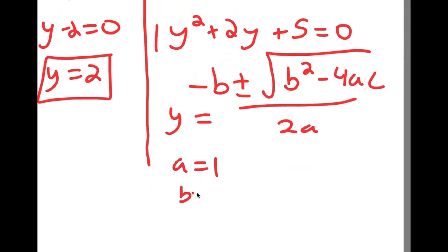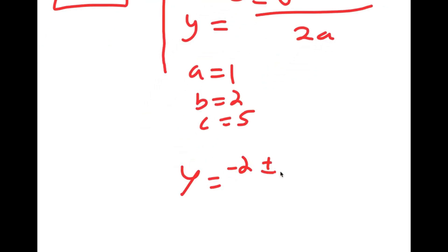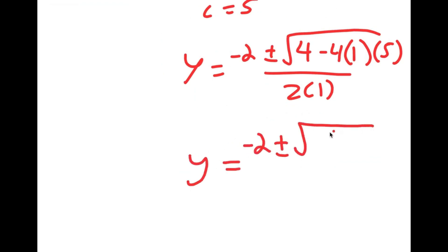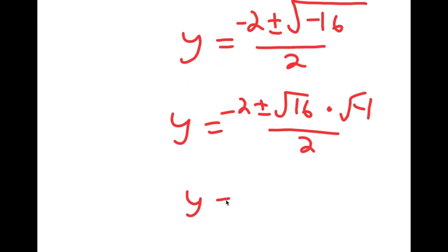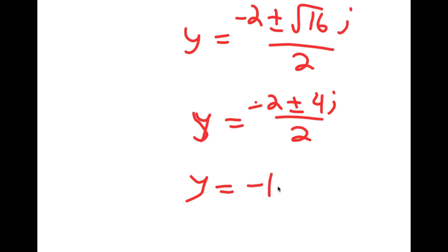So in this case a is 1, b is 2, and c is 5. So I get y is equal to negative 2 plus or minus the square root of 2 squared, which is 4, minus 4 times 1 times 5, all over 2 times 1. This equals negative 2 plus or minus the square root of 4 minus 20, which is negative 16, over 2. I can write this as negative 2 plus or minus the square root of 16 times the square root of negative 1 over 2, which gives negative 2 plus or minus 4i over 2. Dividing both terms by 2, I get y equals negative 1 plus or minus 2i.